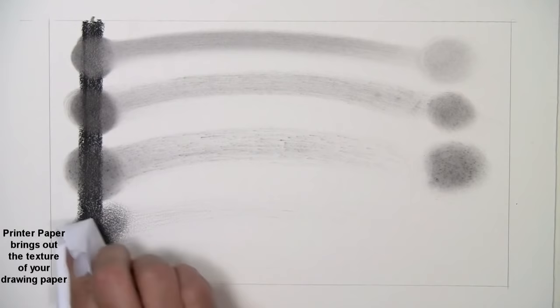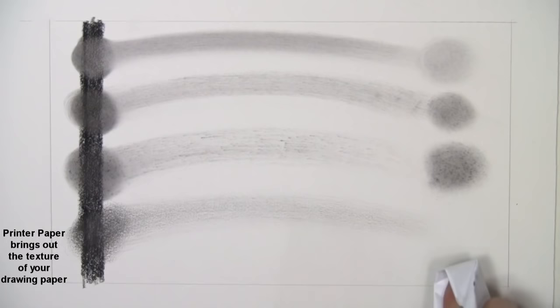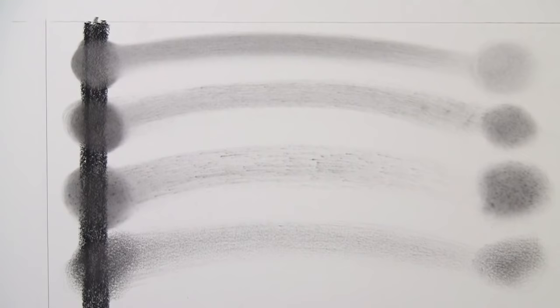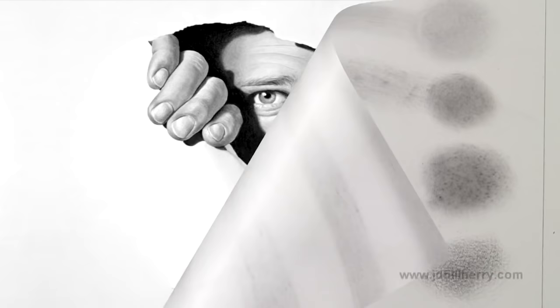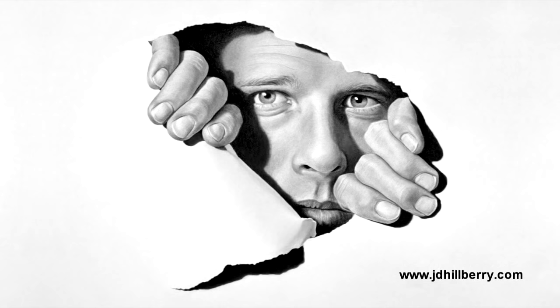So there you have it. Four totally different blending materials that get totally different textures. Now you could try to spend all day trying to create these textures with just a pencil, not using any blending at all. Some of these textures would be impossible to do. In future videos, I'll show how these basic blending techniques can be used to create very realistic textures in real drawings. Not all of these free videos will be available on YouTube because of their time restrictions. So don't forget to sign up on my email list so you don't miss any. Thanks for watching.